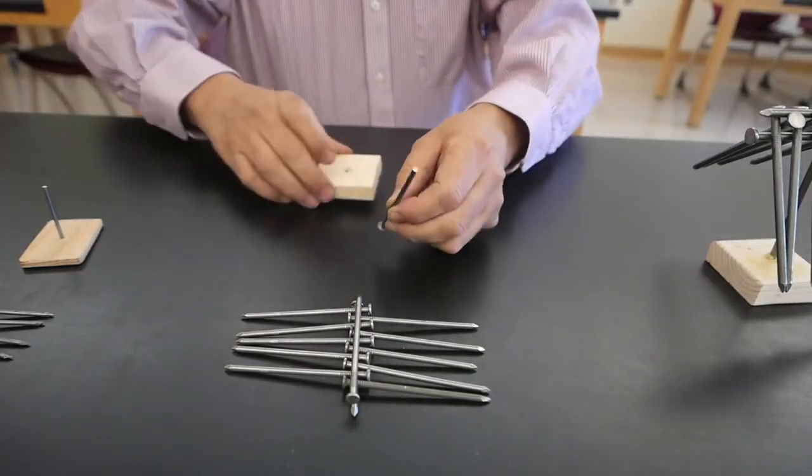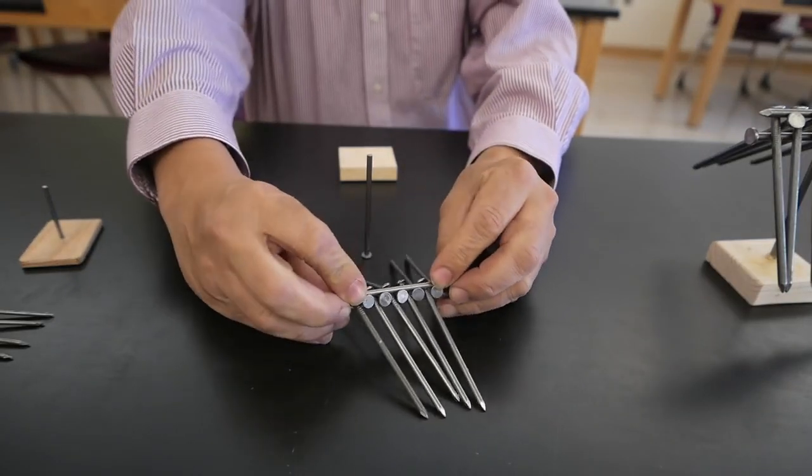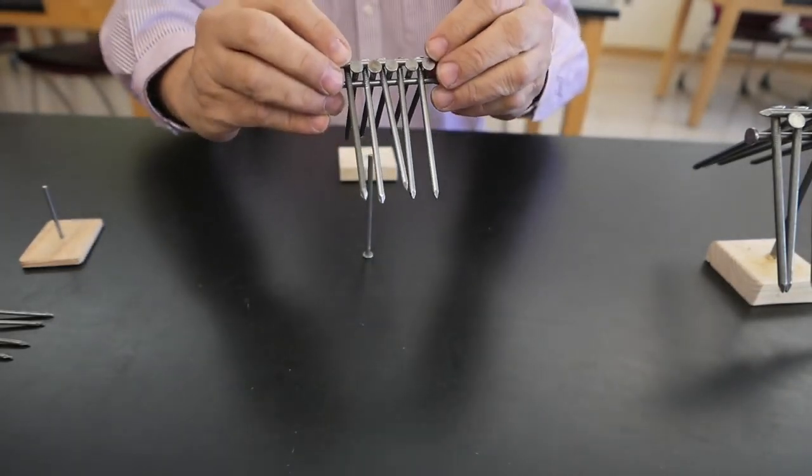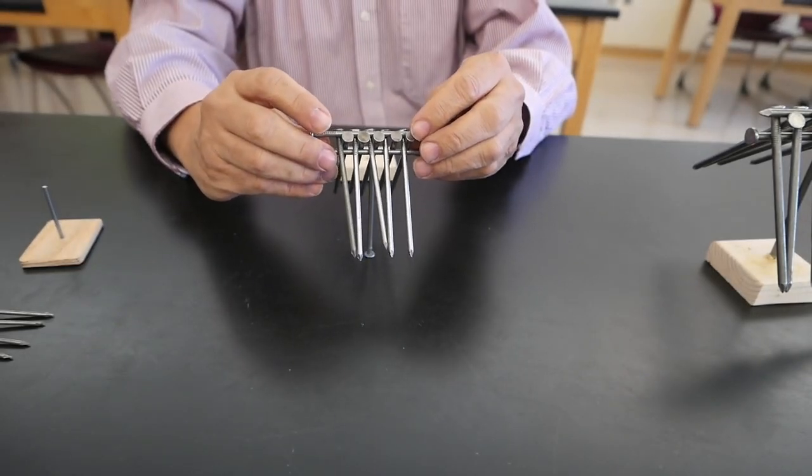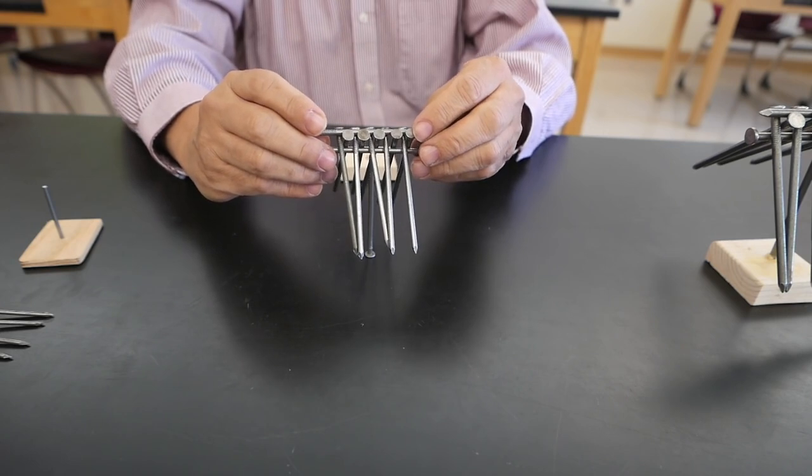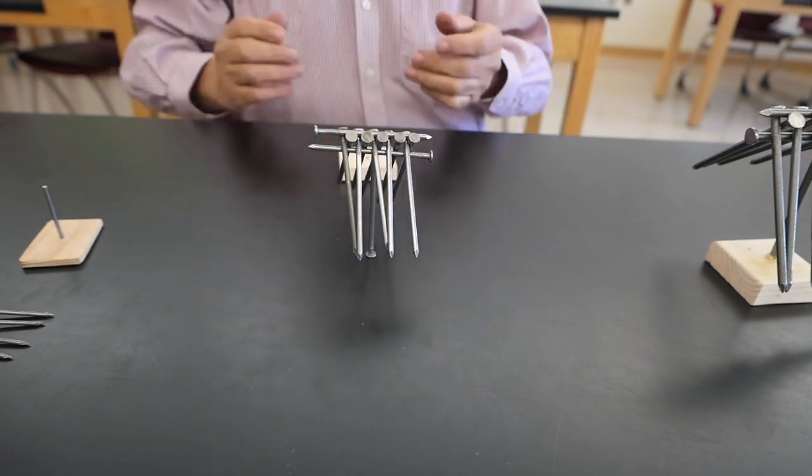Now, if you're extremely careful, you don't need the block of wood. You can simply take the nail and have it stand on its head, and then very carefully place the group of nails on top of it. And if you have it just right, it should balance. Like this.